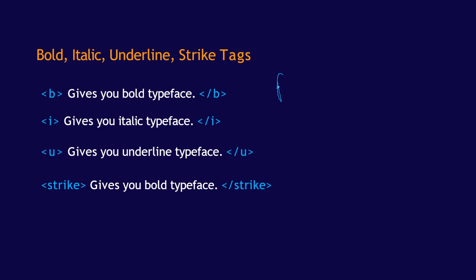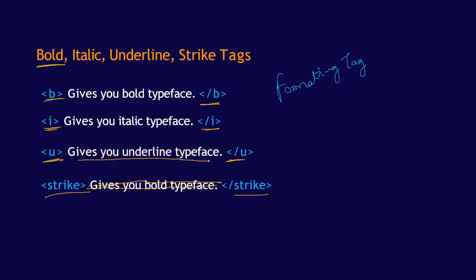There are certain tags also called formatting tags — they add a certain format to your page. The first one is bold, which gives you a bold typeface using the B tag: open B and closing B. For italic typeface, we use the I tag: open I and closing I. To give an underline, we use the U tag: open U and close U. If you want to strike through the content, you use the strike tag: open strike and close strike.